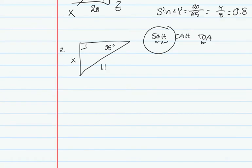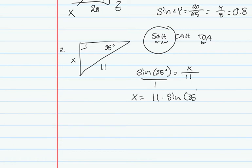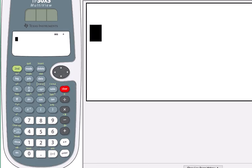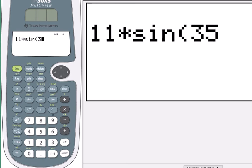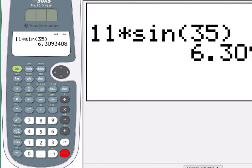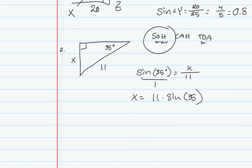I set up sine of 35 degrees equals X over the hypotenuse, which is 11. Putting sine over 1 and cross multiplying, I get X equals 11 times the sine of 35 degrees. Typing that into the calculator gives approximately 6.31. This makes sense since 35 is a smaller acute angle, so its opposite side should be smaller than the hypotenuse.